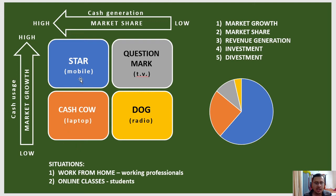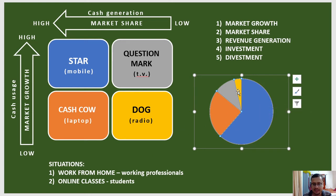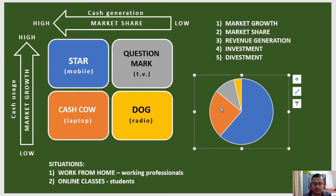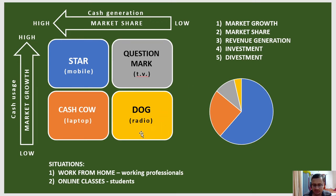Company XYZ is running four product lines: radio, TV, laptops, and mobile phones. A pie chart shows the market share of each product — yellow for radio, gray for TV, orange for laptops, and blue for the star-performing product, mobile phones.